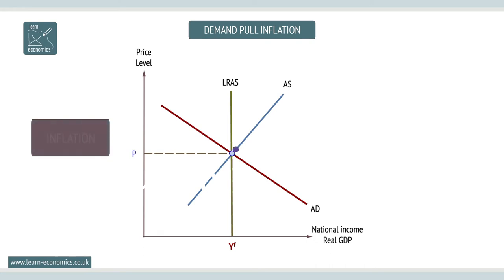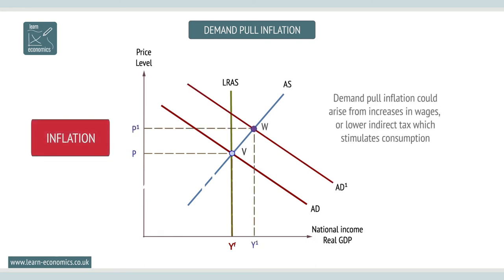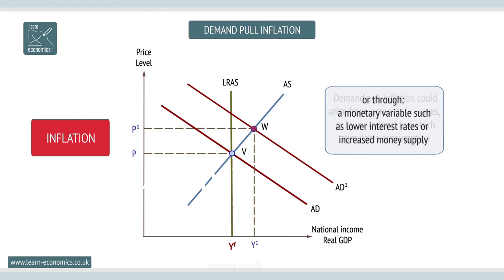Demand-pull inflation could arise from increases in wages or lower indirect tax which stimulates consumption, or through a monetary variable such as lower interest rates or increased money supply. The AD curve shifts to the right.